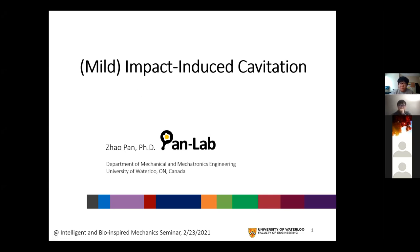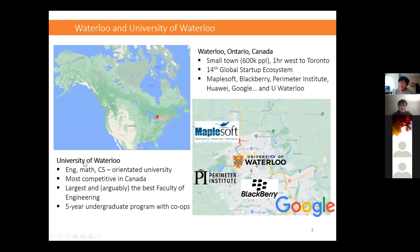Before going to the talk, here's a small introduction about Waterloo and the University of Waterloo. This is where I work. Waterloo is a small town in Ontario, Canada — not where the famous battle where Napoleon failed. It's one hour away from Toronto, but it's a very dynamic and active place. According to a recent report, it's number 14 for global startups. For reference, Beijing is number four and Shenzhen is number 19.